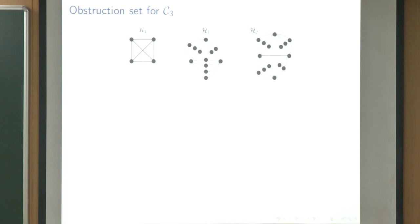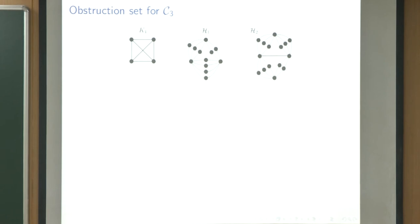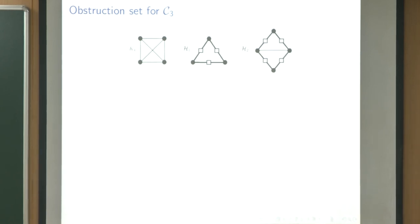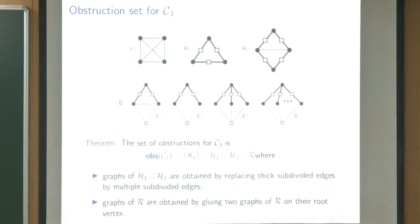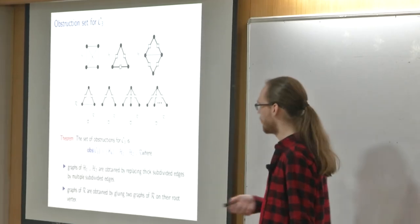Analogously, graphs with two parallel paths between two vertices are also in the obstruction set of C3. More generally, the square on an edge means there can be an arbitrary number of such two-paths between those two vertices, but at least two. Any graph of this form is in the obstruction set. The full theorem characterizes the obstruction set precisely as these graph families — including any two such graphs glued together at a single vertex.